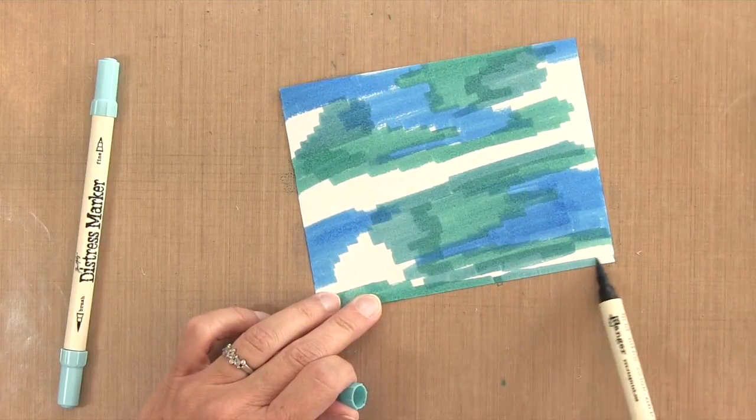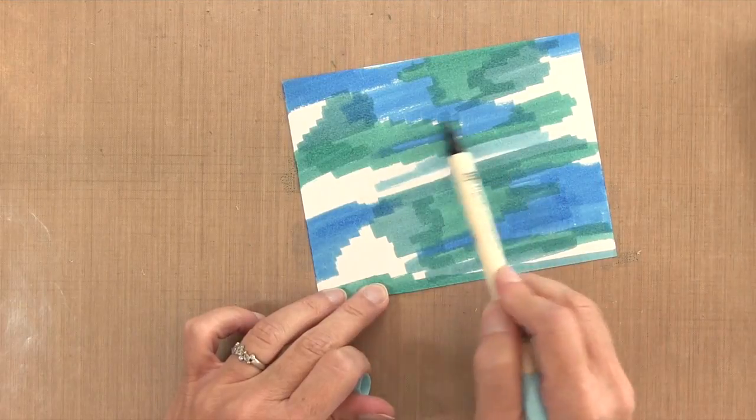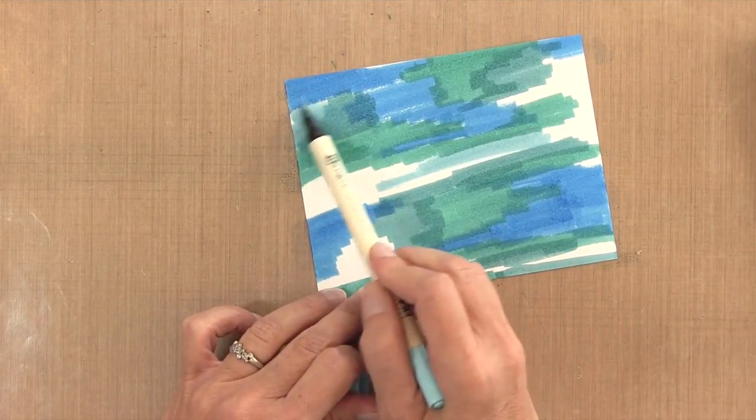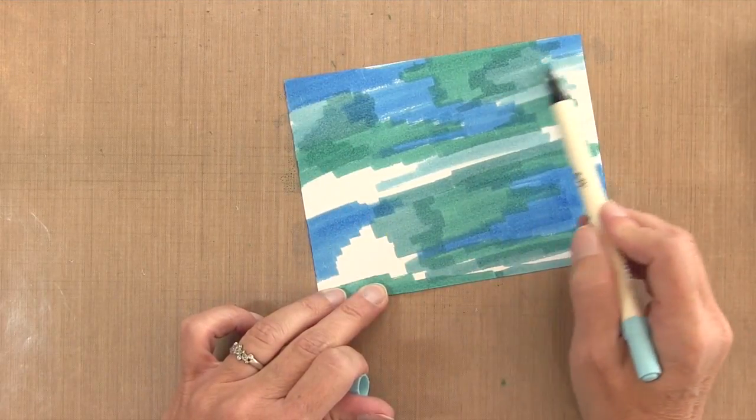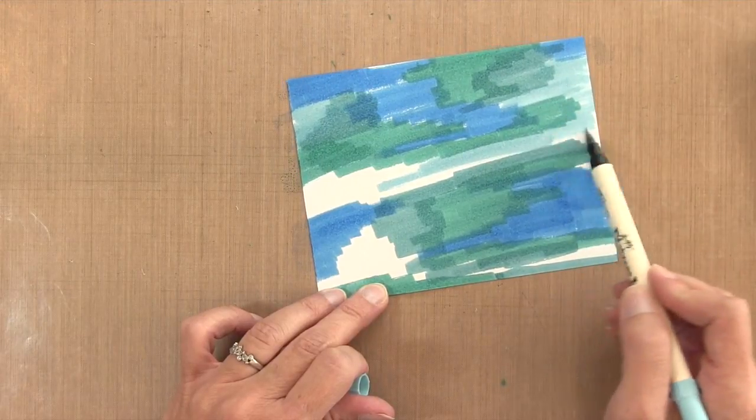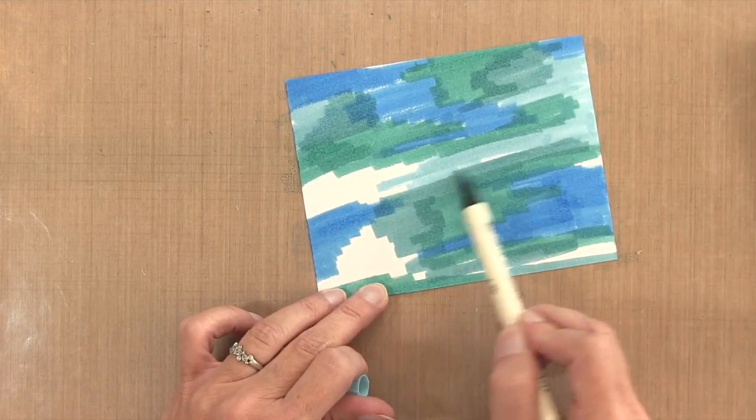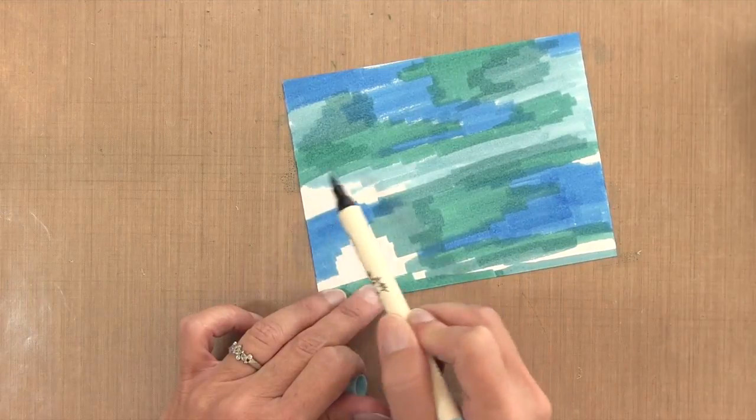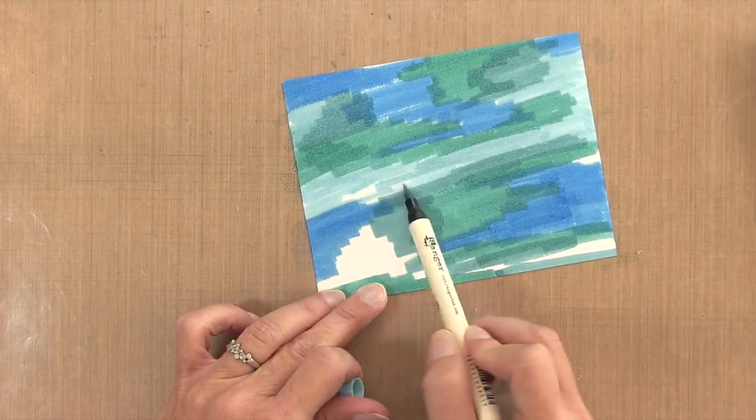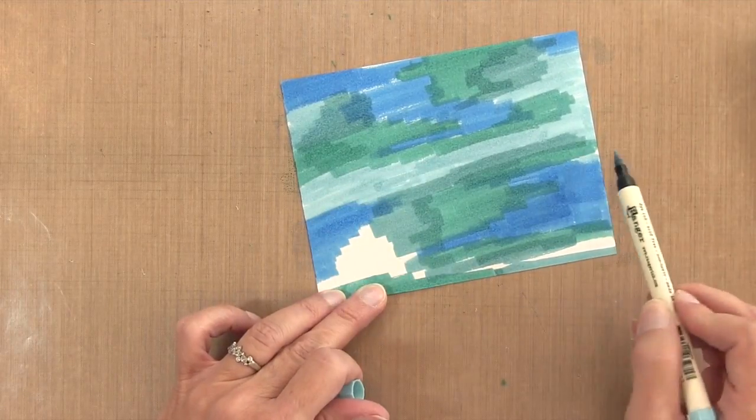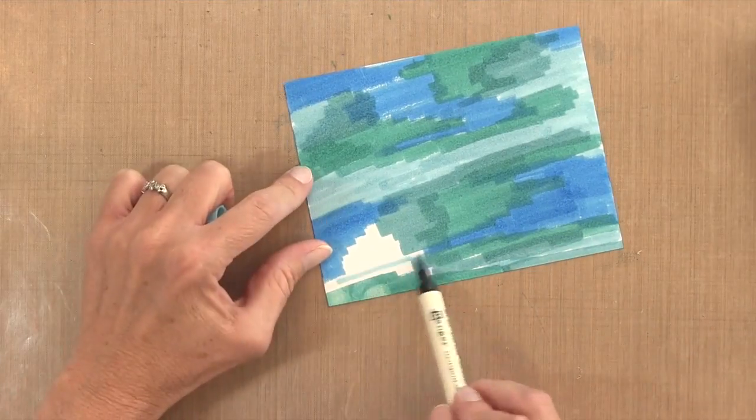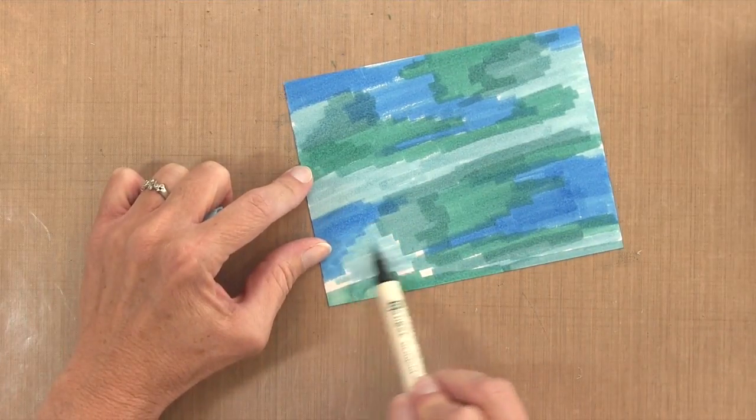But it's going to look really pretty once we put some water on there. I'm going to fill in all the remaining white areas, every single gap, with my lightest marker, which is Tumbled Glass. Distress markers are very special water-based markers, so you're going to be able to do things like this that you wouldn't be able to do with other types of water-based markers. There's just something about how the distress ink reacts with water that allows you to blend colors really seamlessly together.